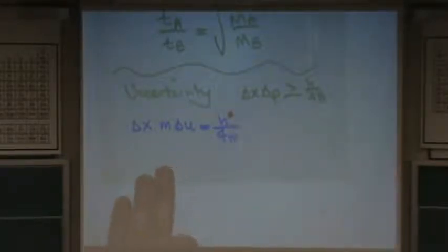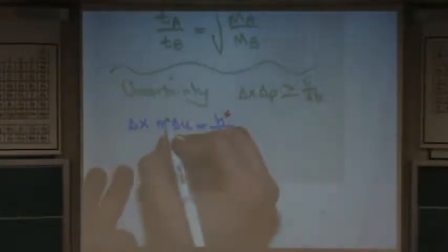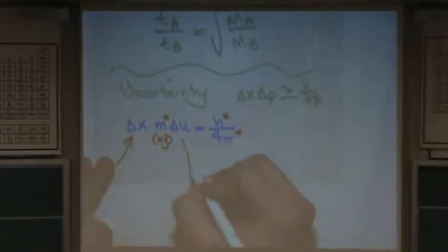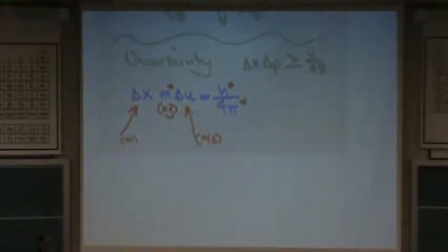I'll put a star by all the constants: h is a constant, 4 is a constant, pi is a constant. Mass is usually given — we're typically talking about an electron, so it's about 9.1 times 10 to the minus 31 kilograms. That has to be in kilograms. So that means there are only two things left: a distance in meters and a velocity in meters per second. They're either going to give you the distance and ask for velocity, or give you the velocity and ask for distance. That's it.